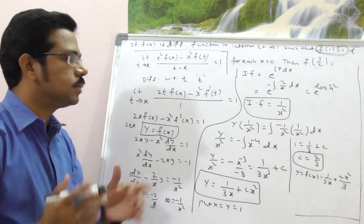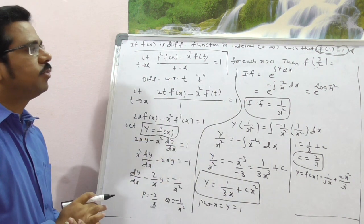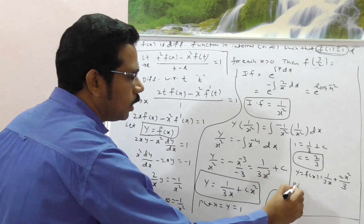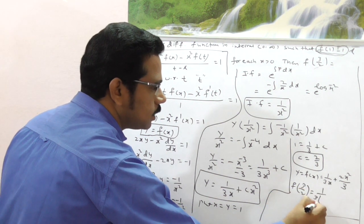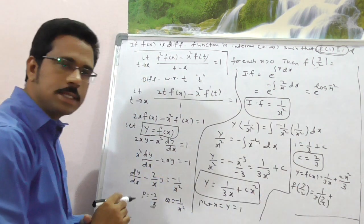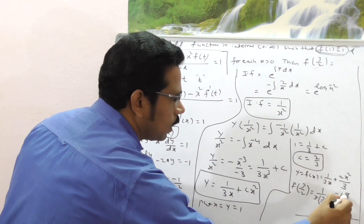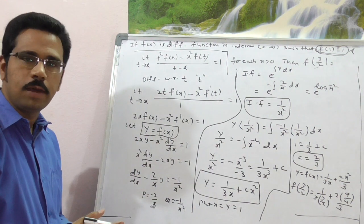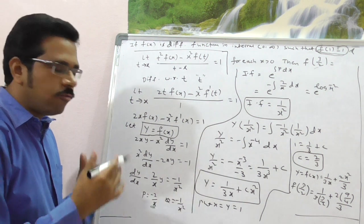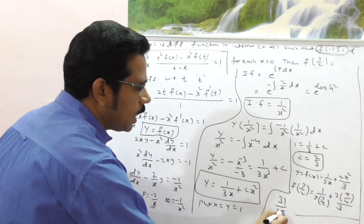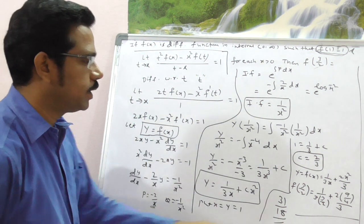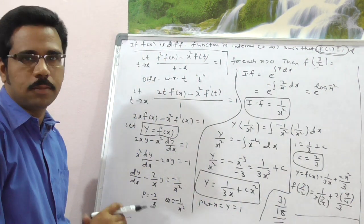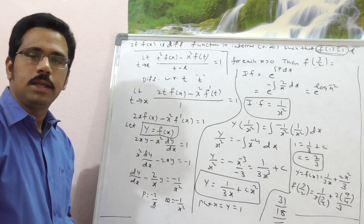Finally, we calculate f(3/2). Substituting x = 3/2: f(3/2) = 1/(3·(3/2)) + (2/3)·(3/2)² = 1/(9/2) + (2/3)·(9/4) = 2/9 + 18/12 = 2/9 + 3/2. Taking LCM and simplifying, the answer is f(3/2) = 31/18.